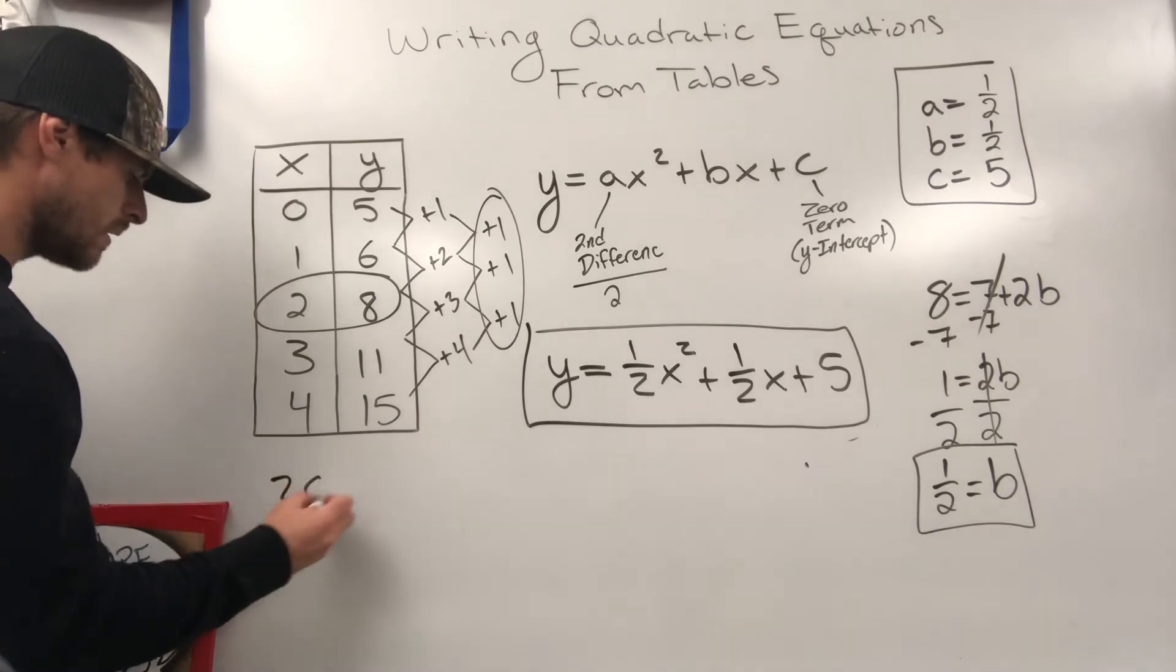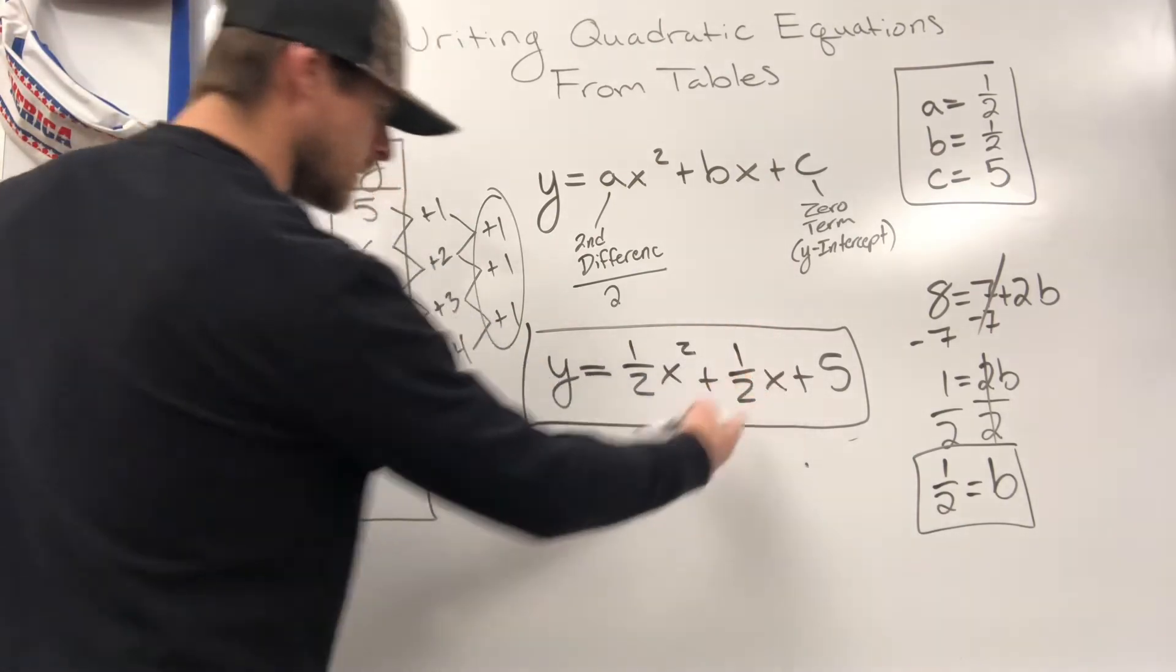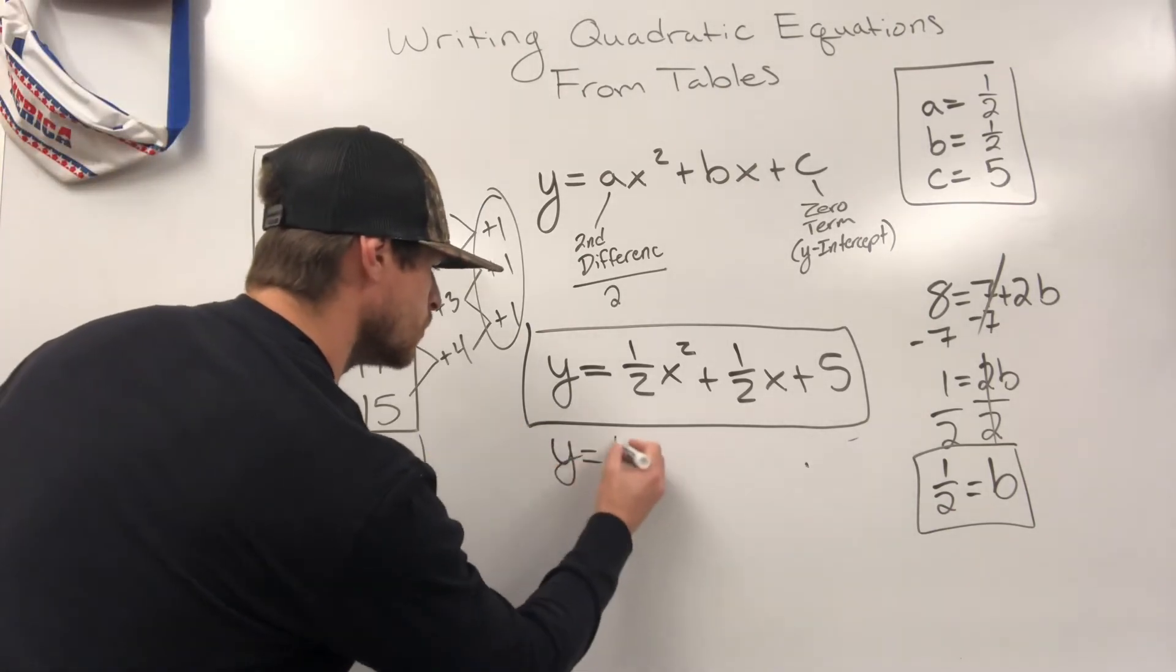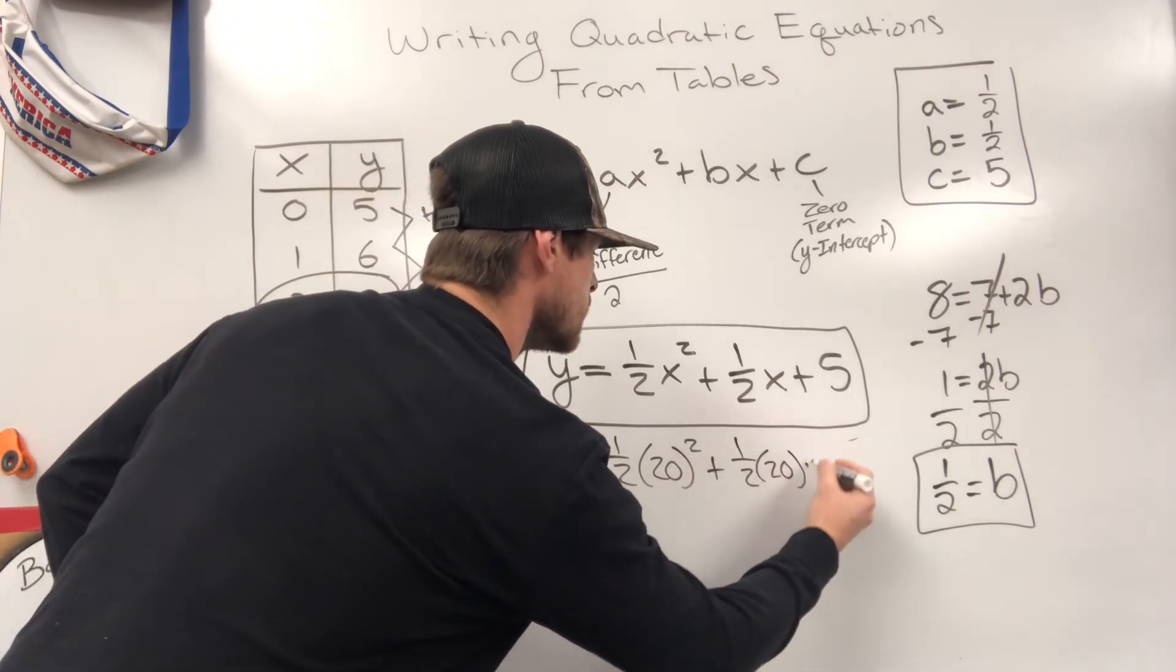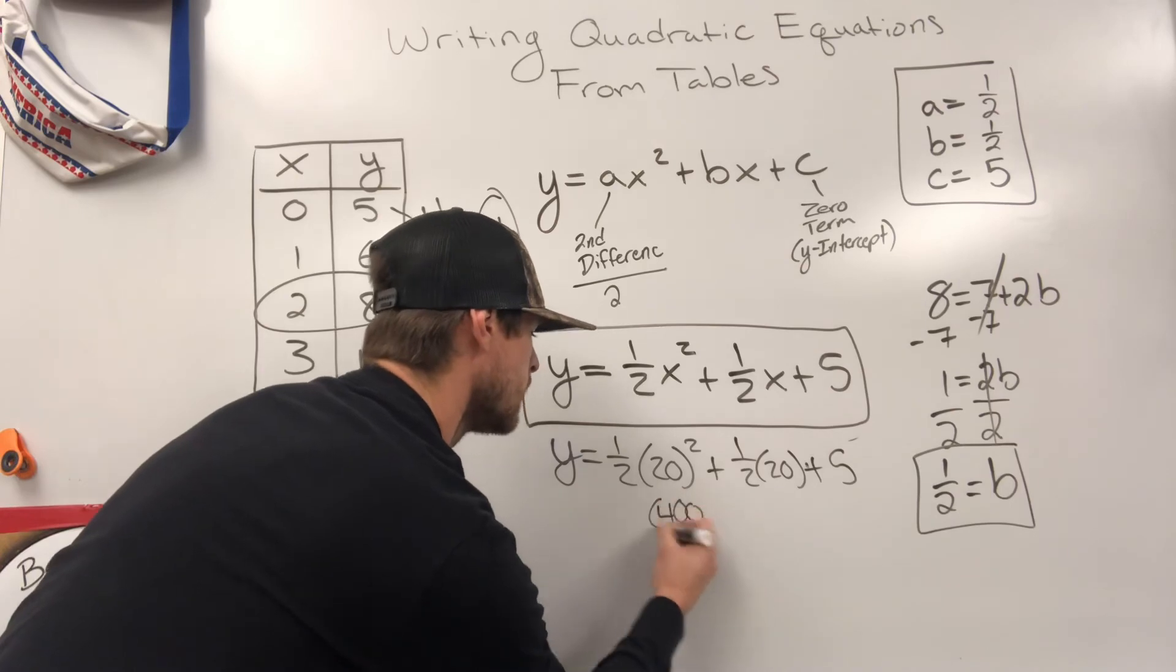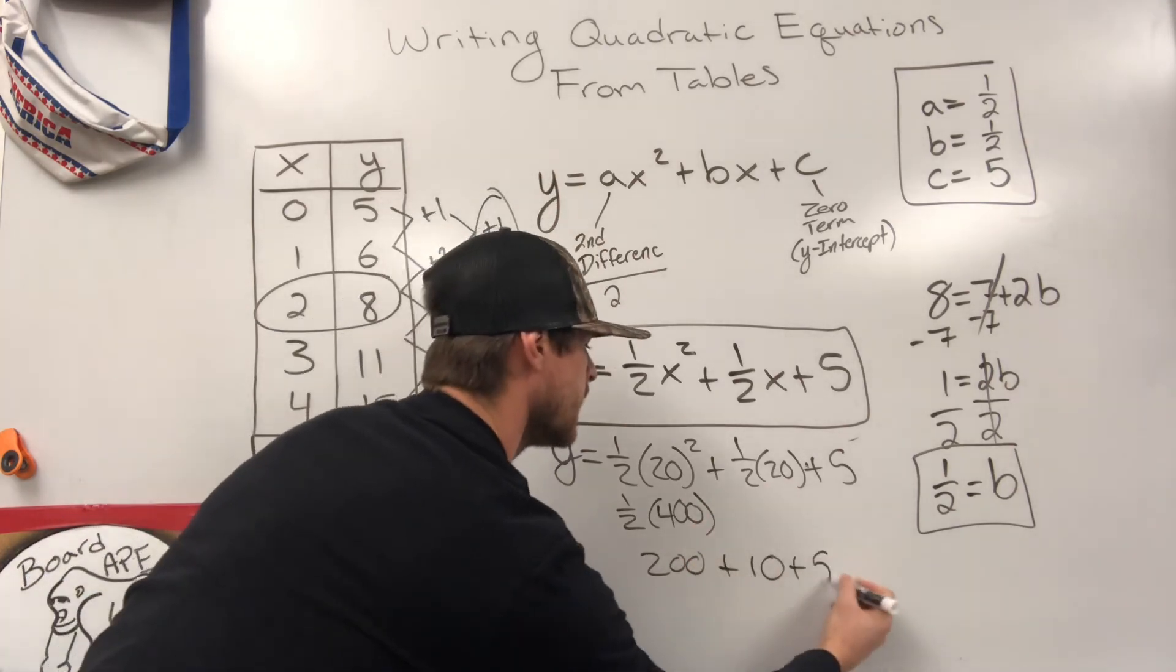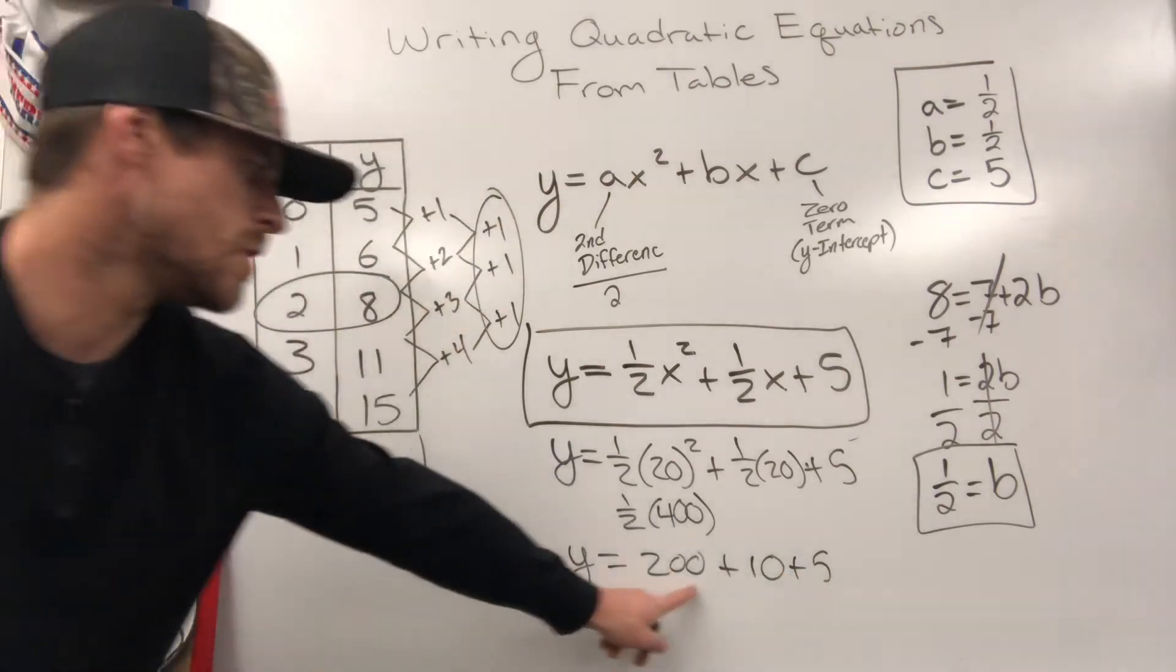That quadratic equation would give you any value that you need continued through this pattern. I can now throw a 20 in there on a test and say, what would Y be? You would put 20 here and here to determine what it is. Matter of fact, let's actually just go through with that because you're probably going to be asked a question like that on your test. Let's figure out what Y would be if X is 20. Y is equal to one half times 20 squared plus one half times 20 plus five. 20 squared, 20 times 20 is going to be 400. We're going to cut that in half, which is going to give us 200 plus one half times 20. Half of 20 is 10 plus five. So Y is equal to 200 plus 10 plus five, 215.